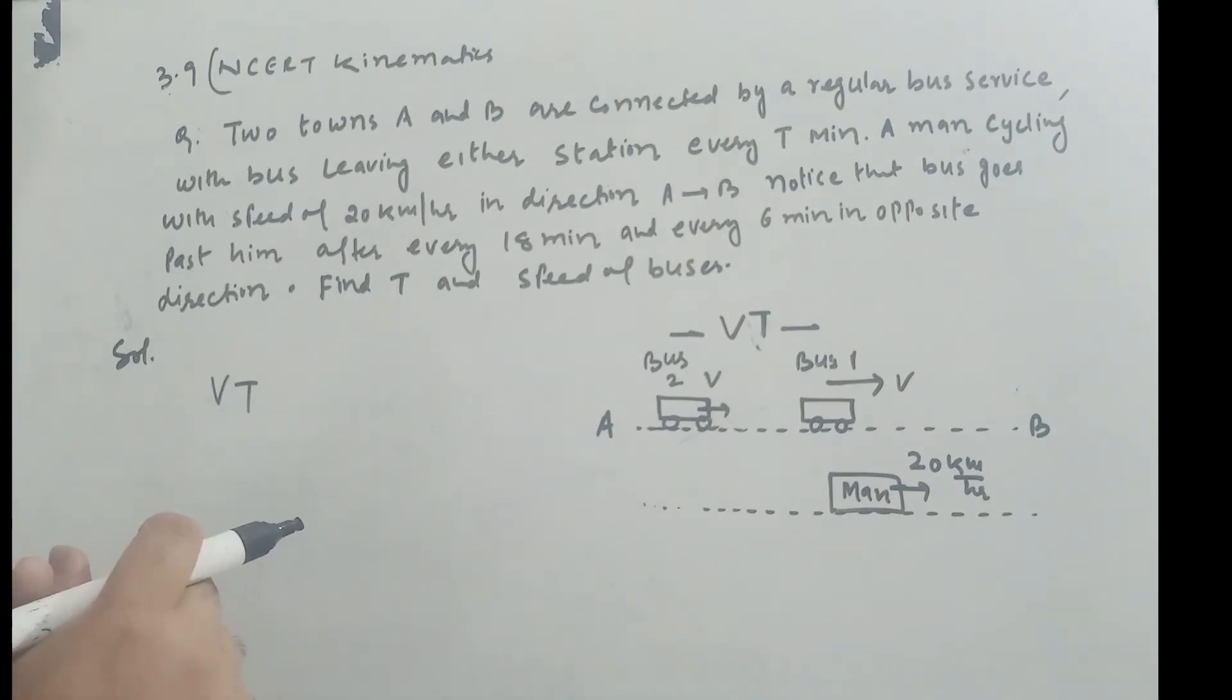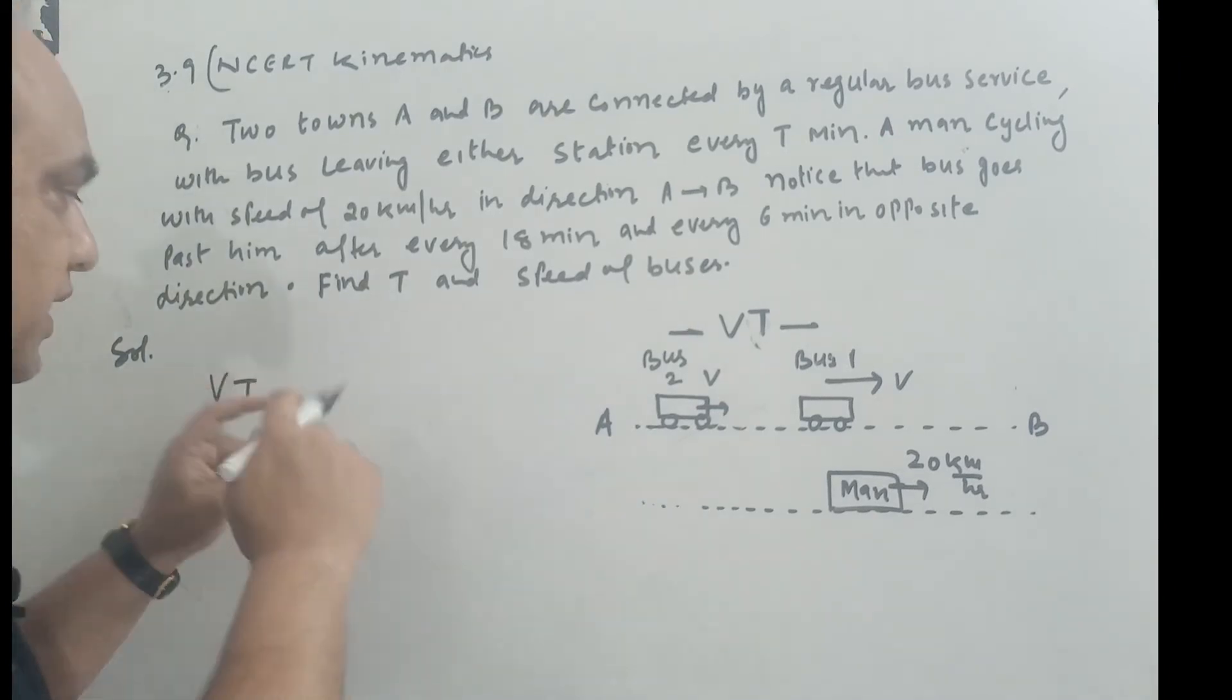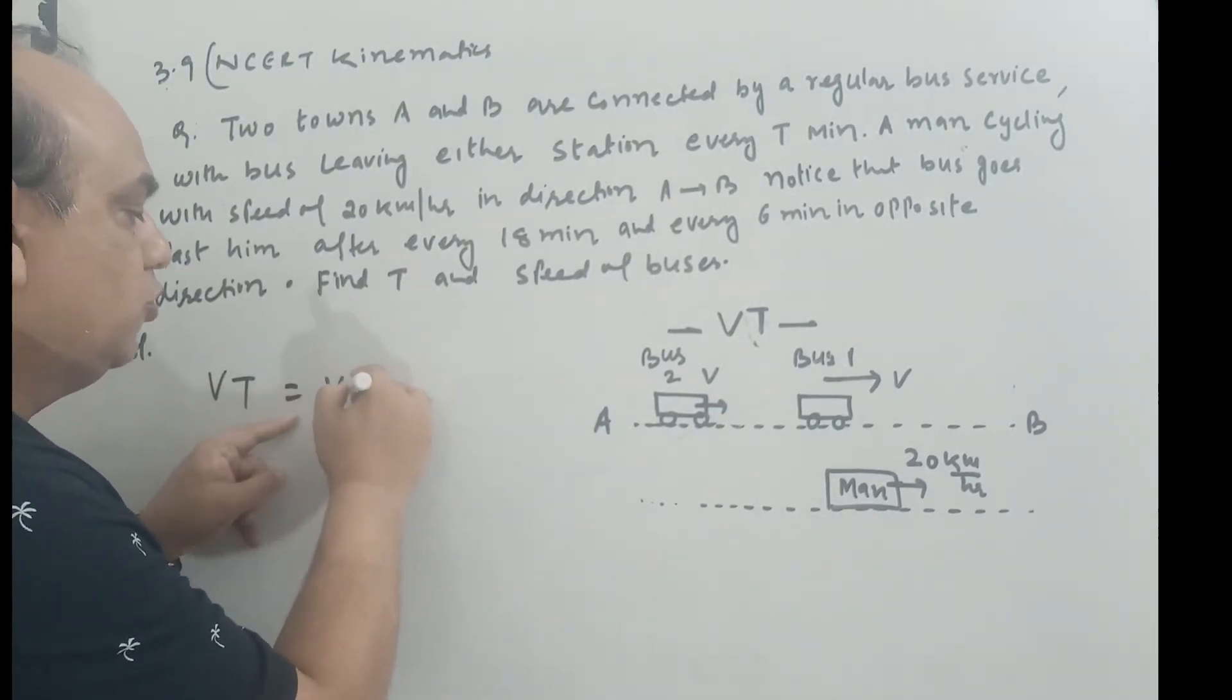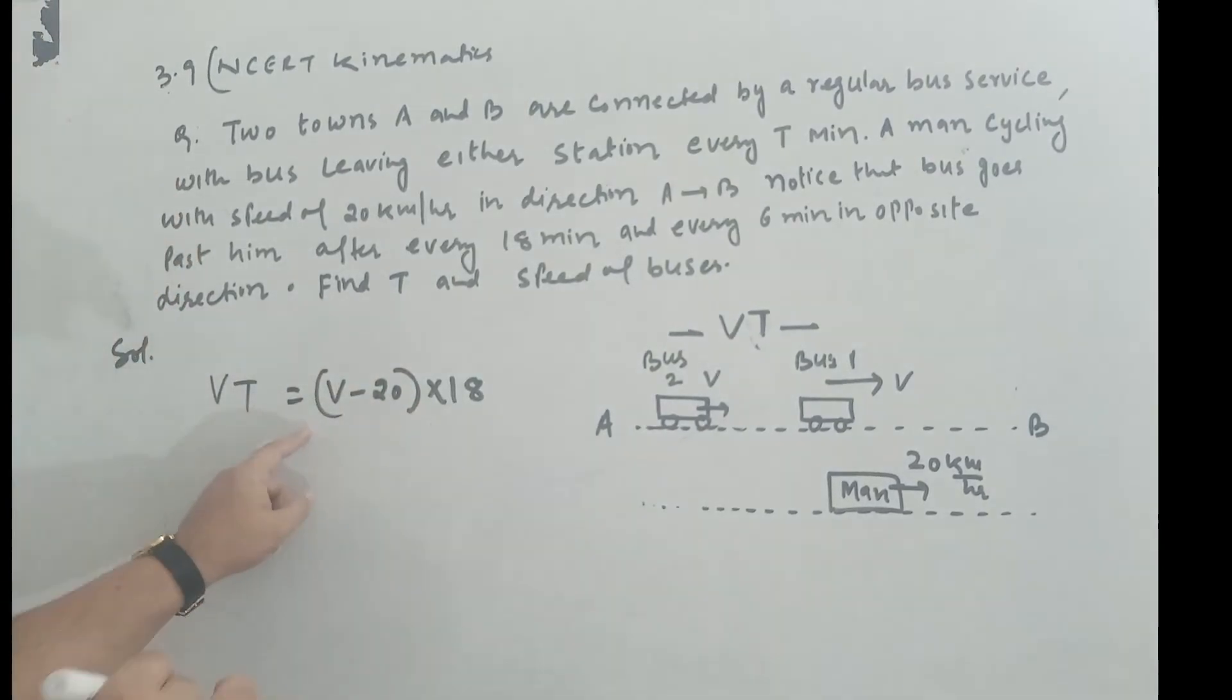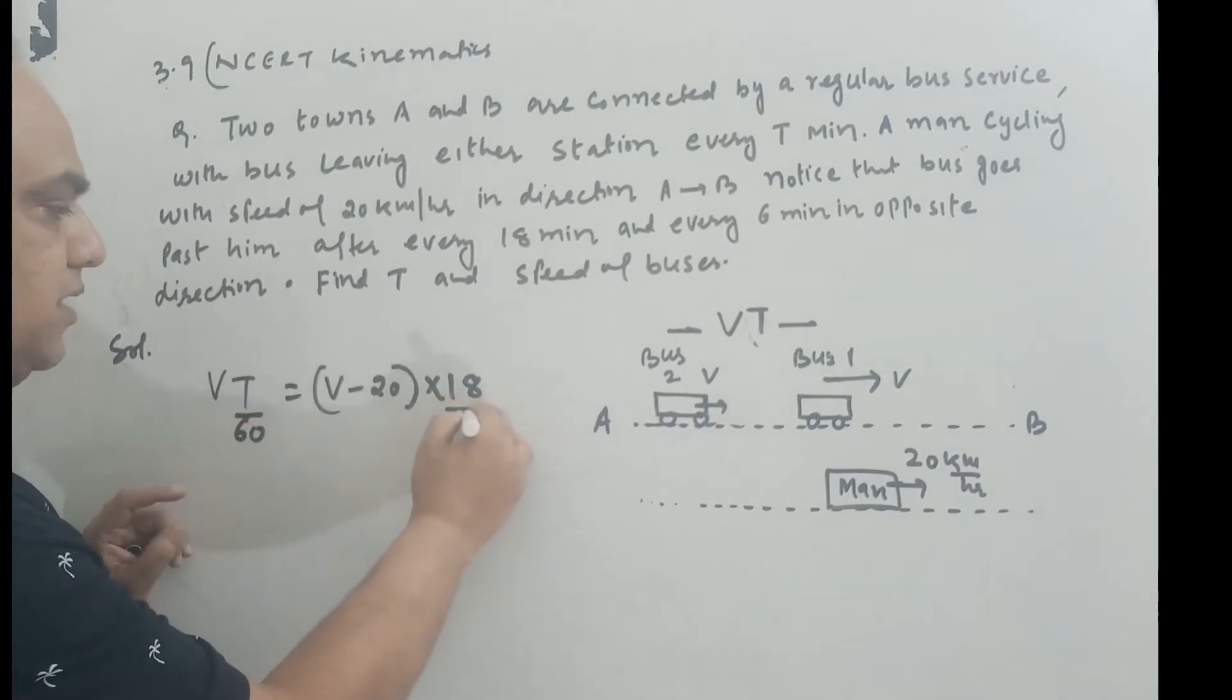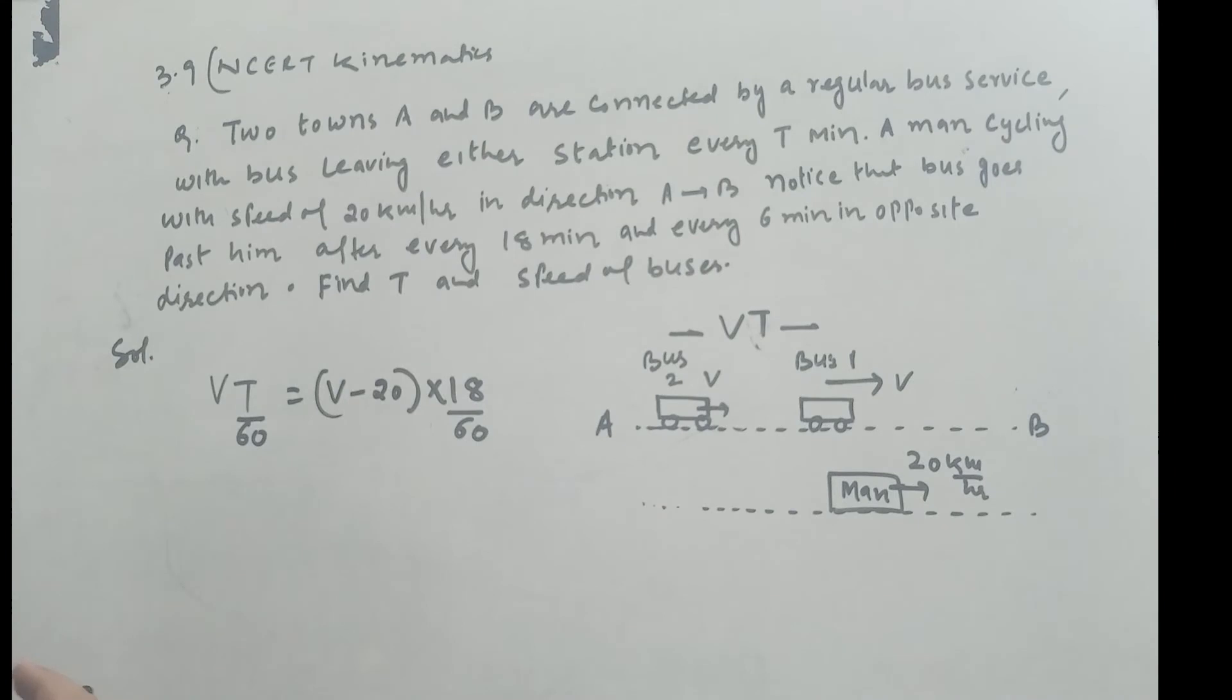Now see bus 2 and the man. Man is moving, stop the man. It means bus 2 will meet the man after 18 minutes, but you have to consider the concept of relative velocity because the man is also moving. So this distance in relative terms, I can write as V minus 20 times 18. This is in minutes, this is in kilometers per hour. If you want to convert by 60 by 60, both will cancel, no issue. If you manage to understand this equation, the whole problem will be clear to you.